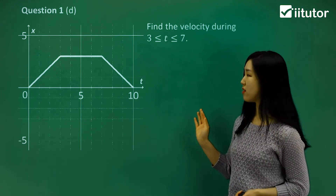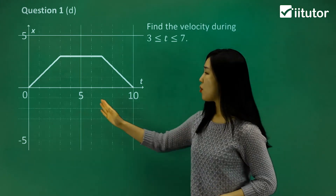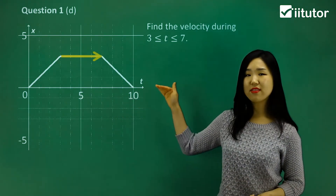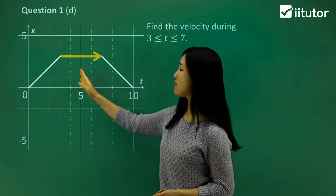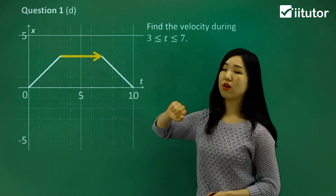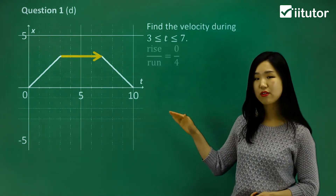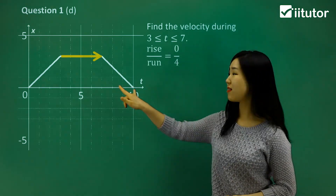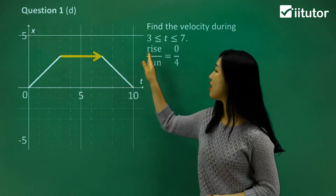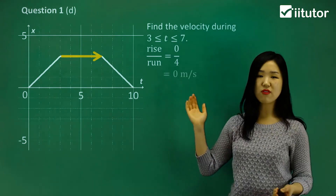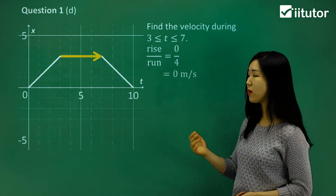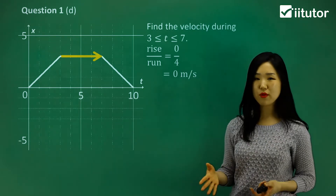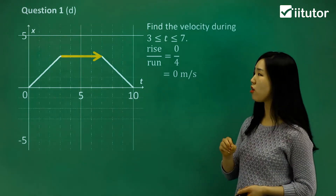Next, they want the velocity from t equals 3 to 7. You can see it's a flat line, so there's no rise — it's only the run. Rise is 0 and the run is 4. So 0 over 4. Zero divided by anything gives us 0. So this one is 0 meters per second, which means we're not moving — no speed, no rate at all.